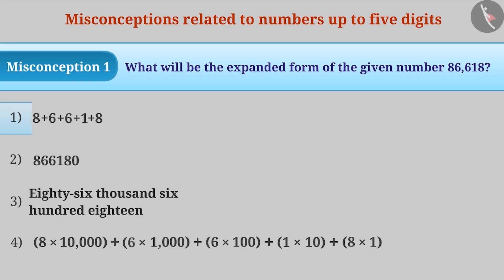Sometimes, because we don't clearly understand the concept of expanded form of a number, we add 8 plus 6 plus 6 plus 1 plus 8 getting a value of 29 which is incorrect. Sometimes, we misunderstand that the expanded form of a given number means to add a zero at the end of the number.